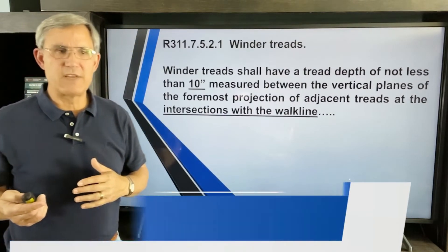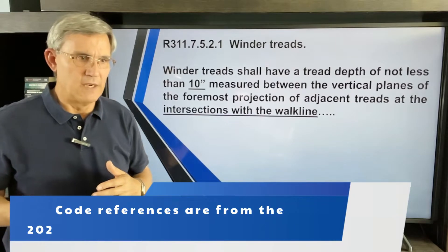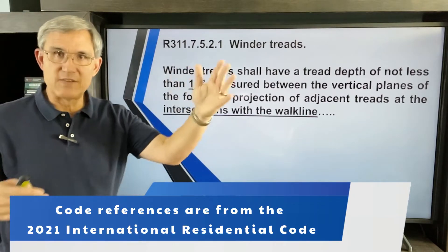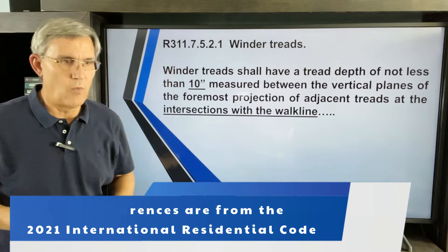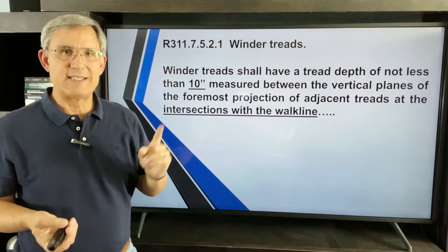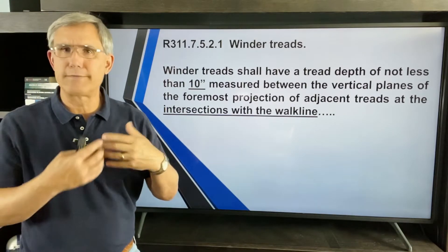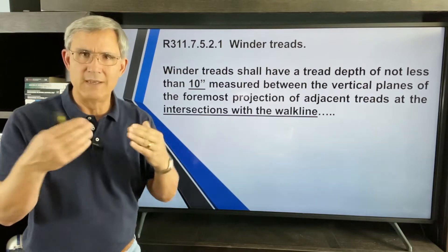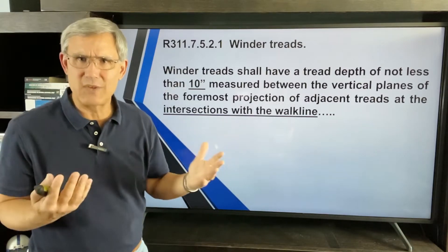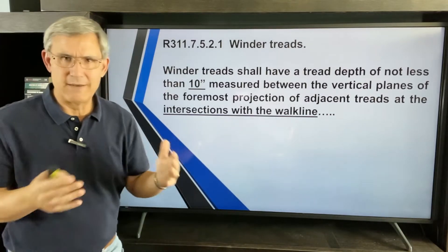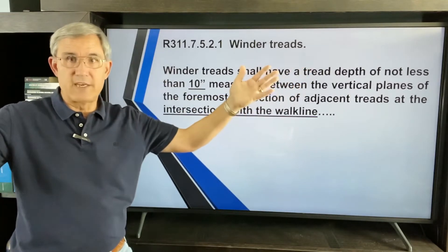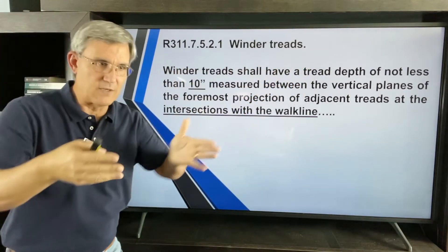Let's look at the rules. The code book section on screen states: winder tread shall have a depth not less than 10 inches, kind of like a regular stairway. But where do you measure that from? I mean, that thing's a fan shape. I'm sure it's 10 inches somewhere, but they tell us.